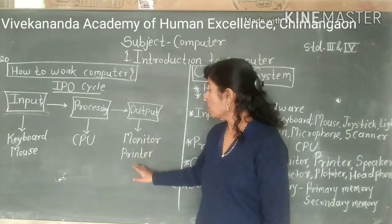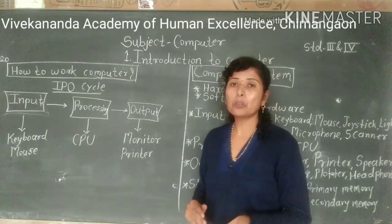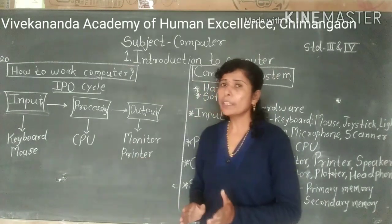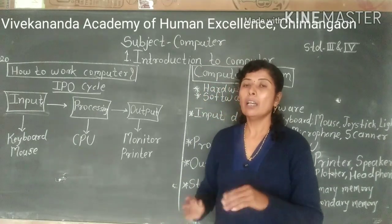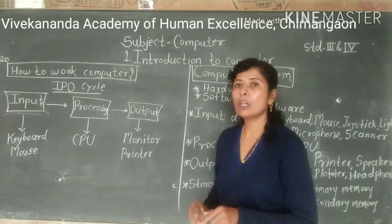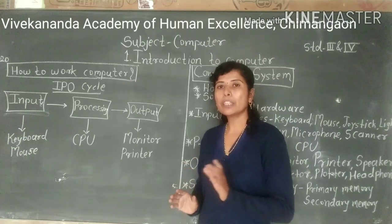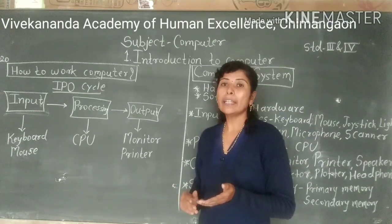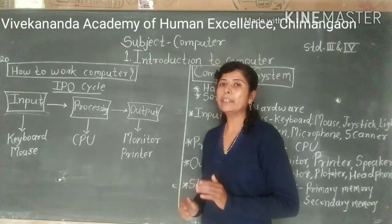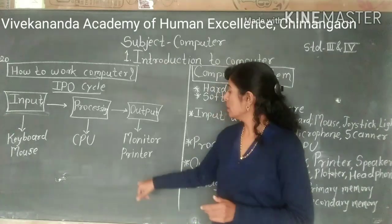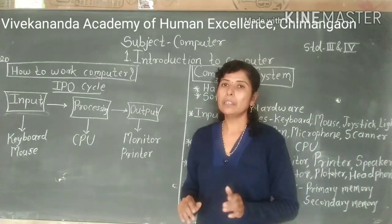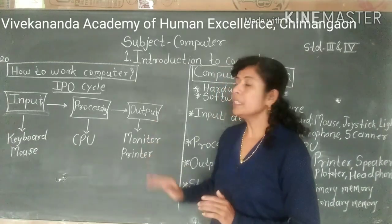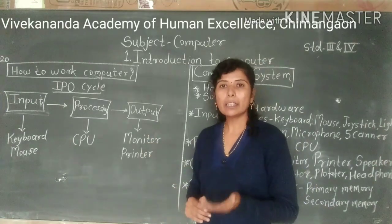Monitor is an output device. Another output device is the printer. Whatever you see on the monitor screen is a soft copy — that is display output, a soft copy. If you want a hard copy, if you want a printout, then a printer is used. So output means to get results after processing.